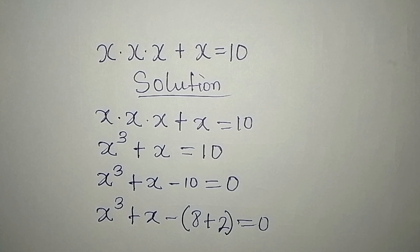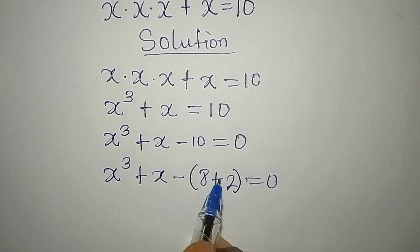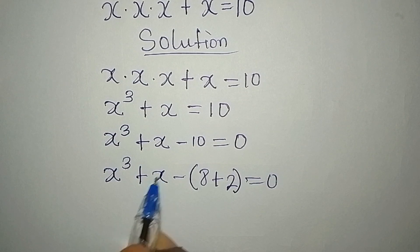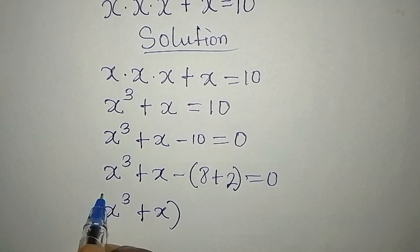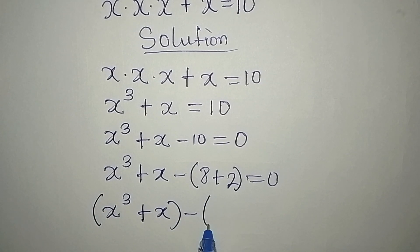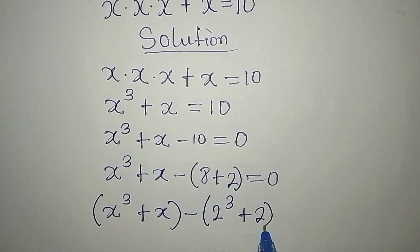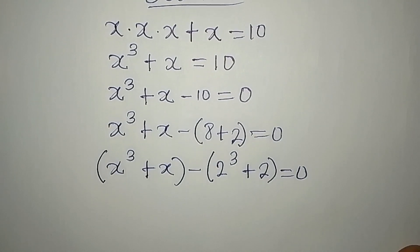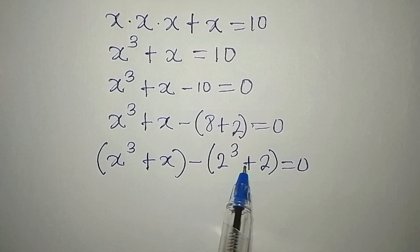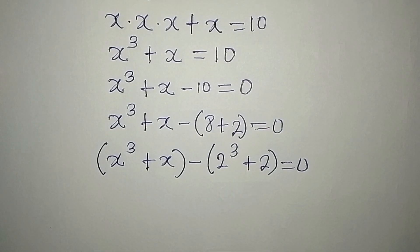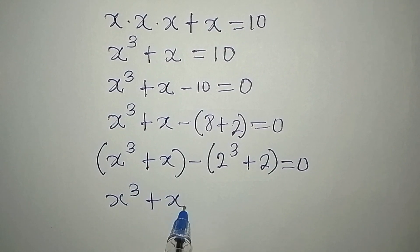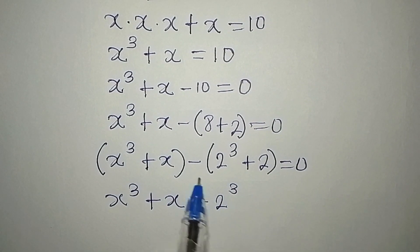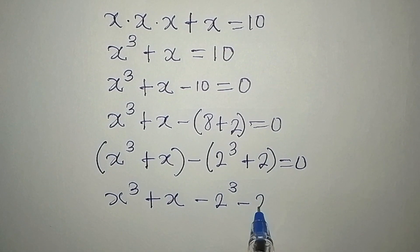I'm using 8 plus 2 because I can express it in a useful form. So we'll now have x to the power of 3 plus x, minus, open bracket: 8 is 2 to the power of 3, then plus 2, close bracket, equals zero. From here, what we have in these two brackets are in the same form. We open the brackets: x³ plus x minus 2³, and the negative affects the 2 so it becomes negative 2.